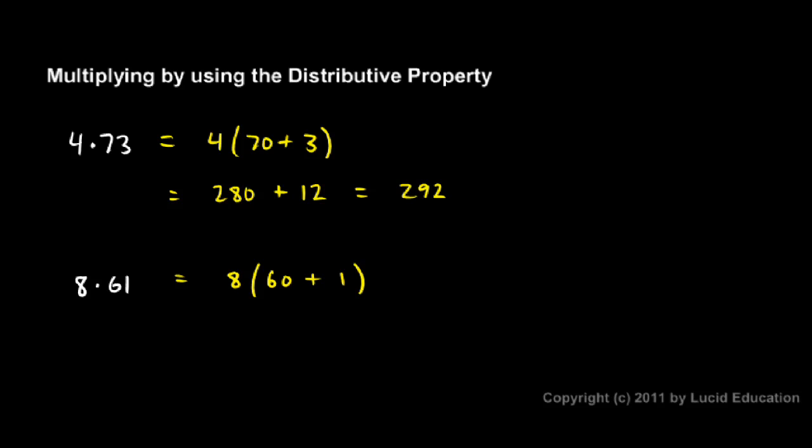Now when I distribute the 8, I would multiply 8 times 60 and 8 times 1. So 8 times 60 is 480, and then 8 times 1 is 8. And it's pretty easy to see that 480 plus 8 is 488.